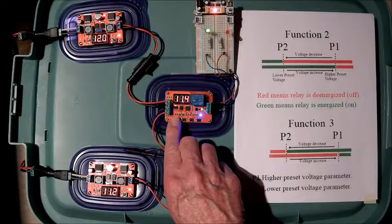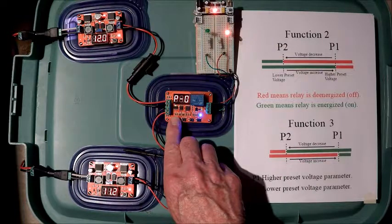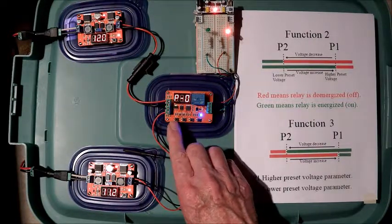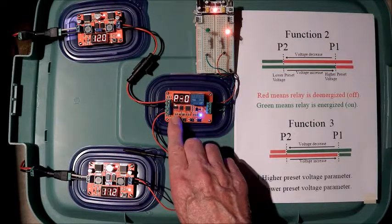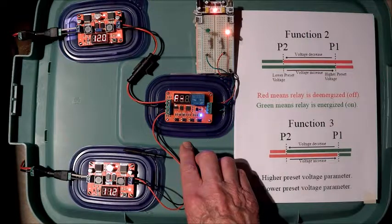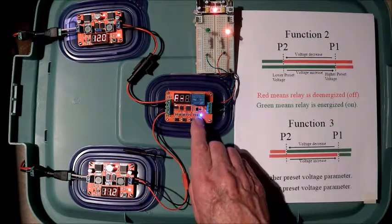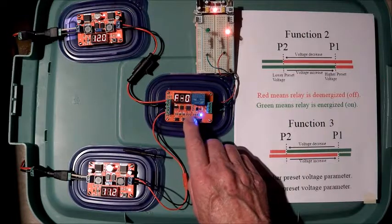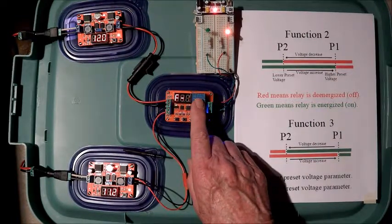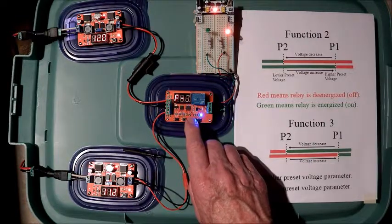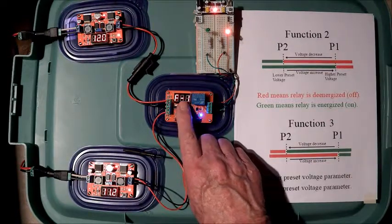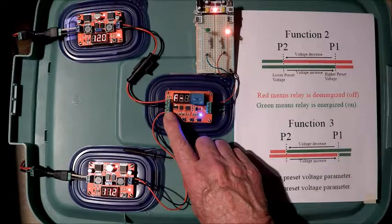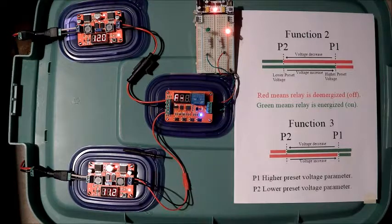Holding the set button down for over a second will take you out of the operational mode into the parameter set mode. To see what function I have selected, I will hit the set button again, and it tells me I'm at function 5. There are function 5, 4, 3, 2, 1, and 0. 0 and 1 have no effect on the relay. In 0 and 1, all you do is have the display show the value of the voltage for the measuring input. So, we will start with function 2.